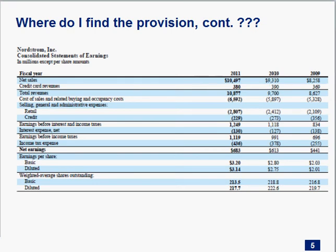Income statement. This is a screenshot of Nordstrom's income statement. If you're looking for the tax provision here, this one's easy — we're looking for this line right here. When people say 'tax provision,' they mean income tax expense. On the income statement, you'll have revenues, expenses, and at the bottom, income tax expense. One of the questions I'll frequently ask is: why is that number what it is? Why is it not higher or lower? What amount of cash did this company pay? Is the expense the same as what they pay?